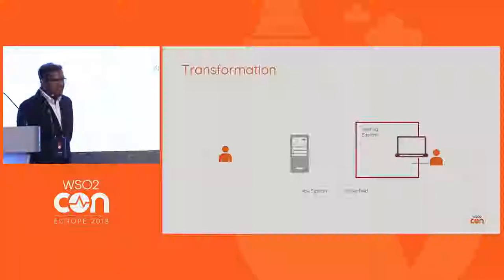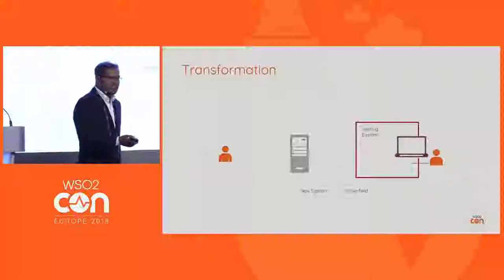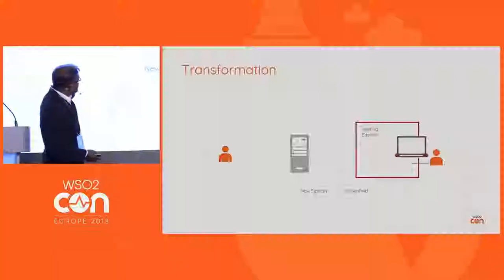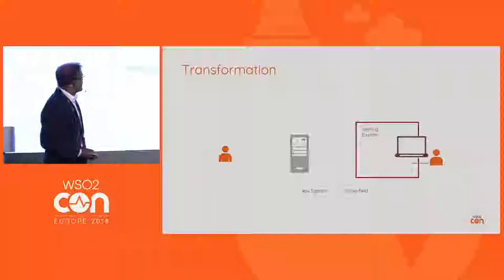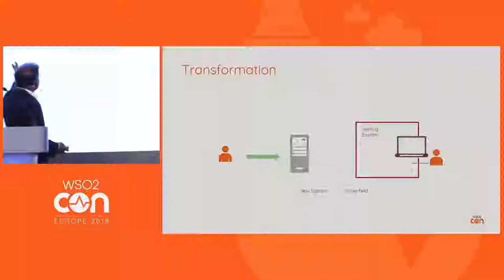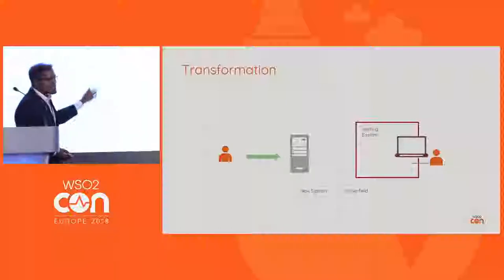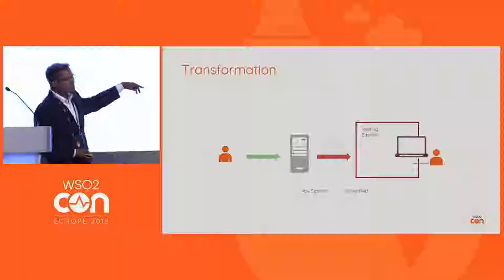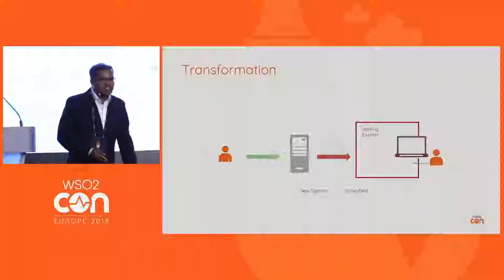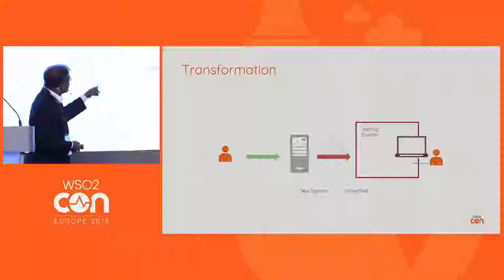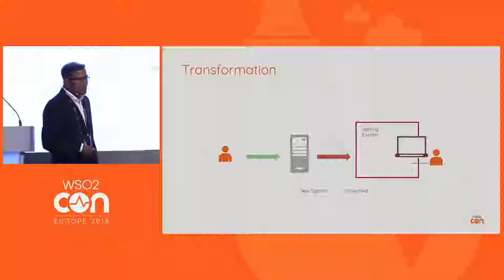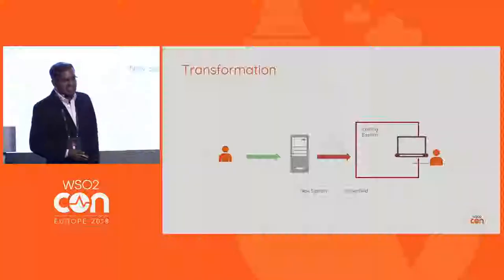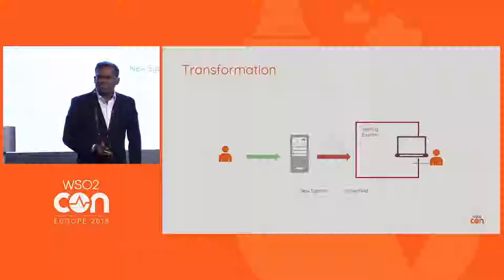Here is an example of a transformation. On the right side we have the new system, and here we have the brownfield system. The user of the new system is sending a message, but the brownfield system is expecting a different structure. So with the new system, we need to perform a transformation so that we can send the expected message to the existing brownfield system.